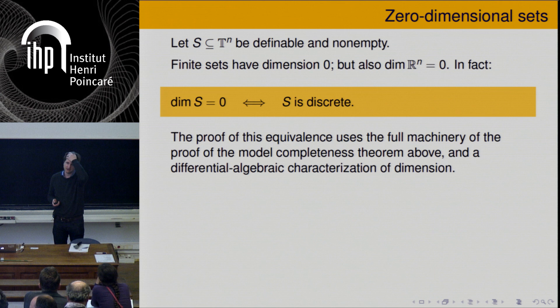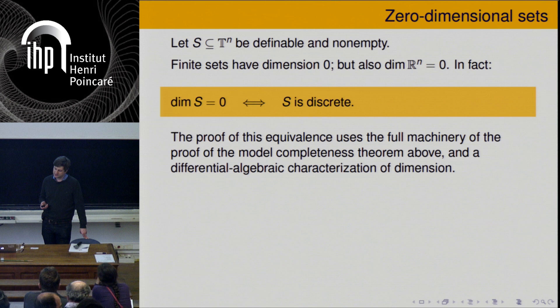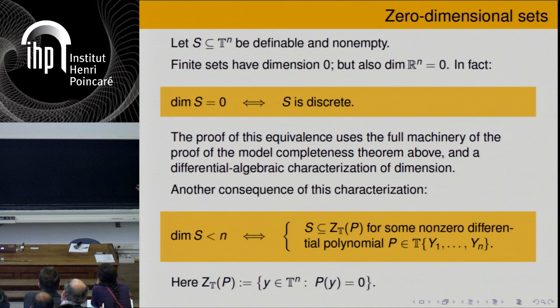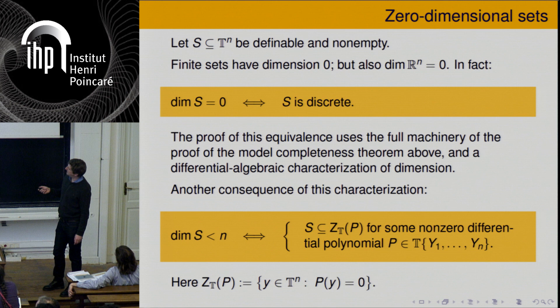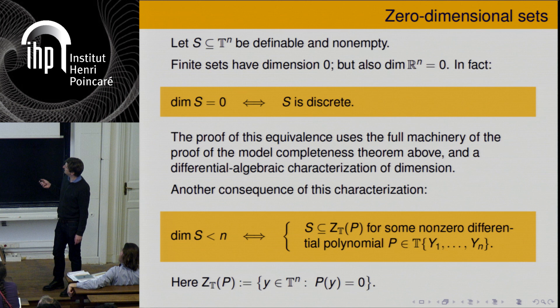This notion of dimension has very nice properties and can be characterized in a number of equivalent ways. Particularly important are the zero-dimensional sets. A non-empty definable set has dimension zero precisely if it is discrete in the order topology. Finite sets have dimension zero, and also the constant field has dimension equal to zero. The proof of this equivalence uses the full machinery of our model completeness proof and also another characterization of dimension in terms of differential algebra. One consequence is that if you have a solution set of a differential equation in one variable, it will automatically be of dimension zero.